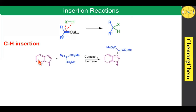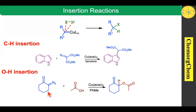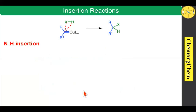For C–H insertion, when you take indole and a diazo compound in the presence of copper acetylacetonate, it readily produces the C–H insertion product at the C3 position. For O–H insertion, when you take a diazo compound with acetic acid in the presence of copper acetylacetonate, it readily produces the O–H insertion product; the carbene intermediate inserts between the O–H bond.